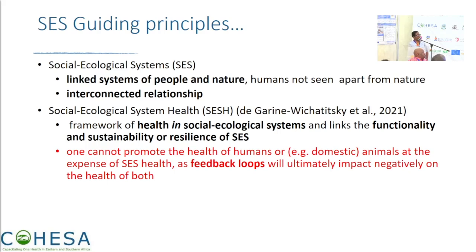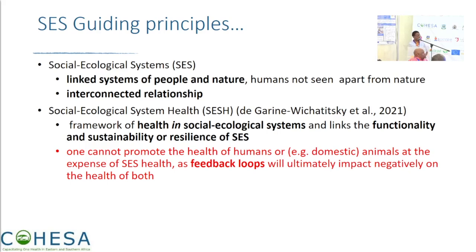We also look at social ecological system health as a framework of health in social ecological systems, and the links of functionality and sustainability or resilience of those systems — so that one cannot promote the health of humans or domestic animals at the expense of social ecological systems health, as feedback loops will ultimately impact negatively on the health of both.